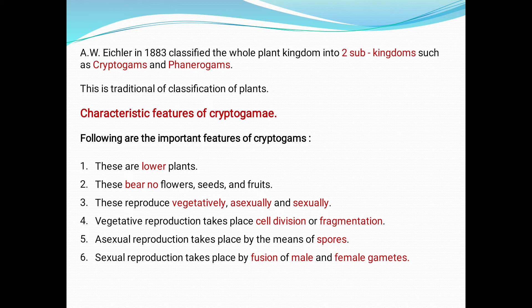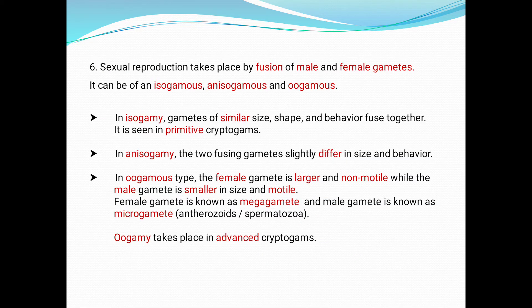Third, these reproduce vegetatively, asexually and sexually. Vegetative reproduction takes place by cell division or fragmentation. Asexual reproduction takes place by means of spore formation. Sexual reproduction takes place by fusion of male and female gametes.